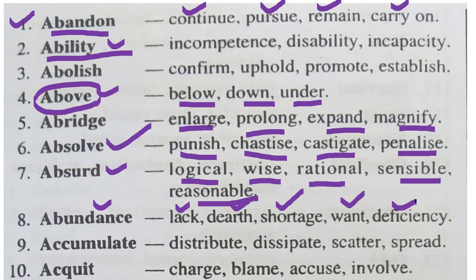If the word given is abundance and you are asked for the antonym, and the options include words like 'lack,' 'dearth,' 'shortage,' 'want,' and 'deficiency,' you have to tick on that particular word. Then you will get one mark — there is no doubt. That section is important.